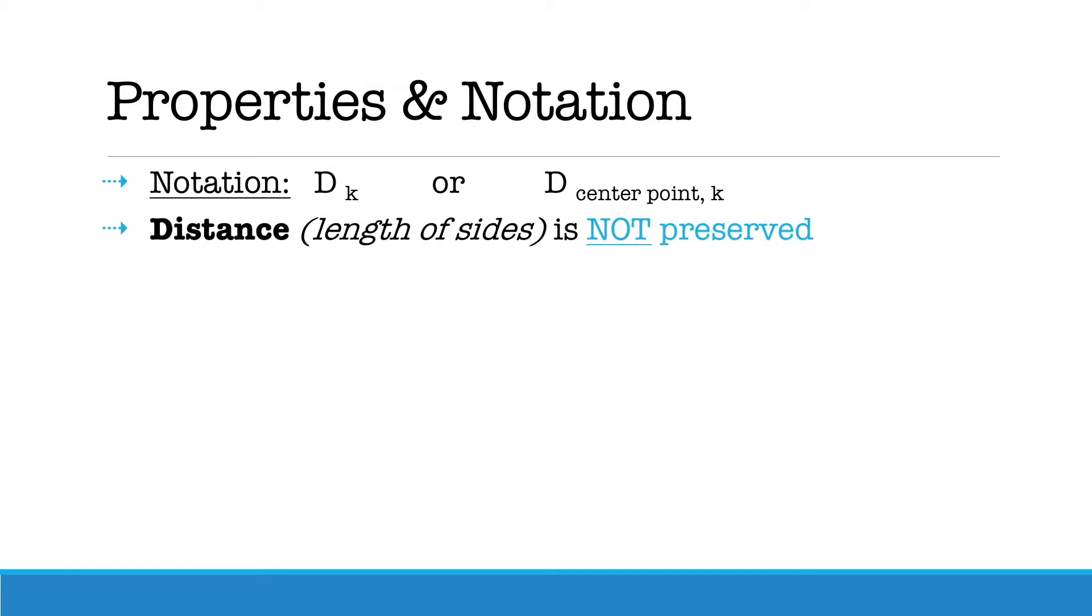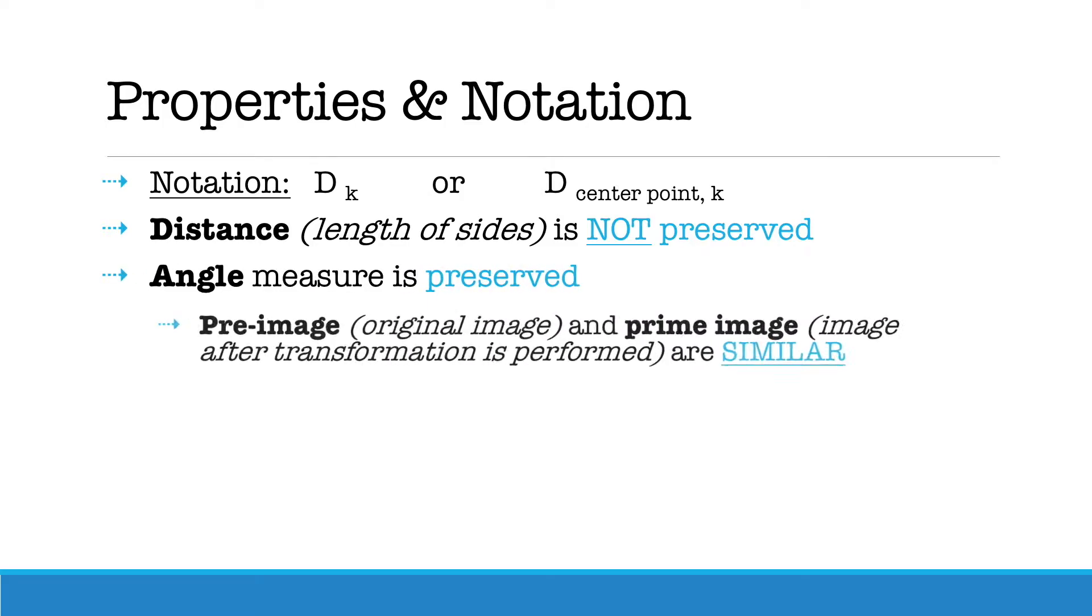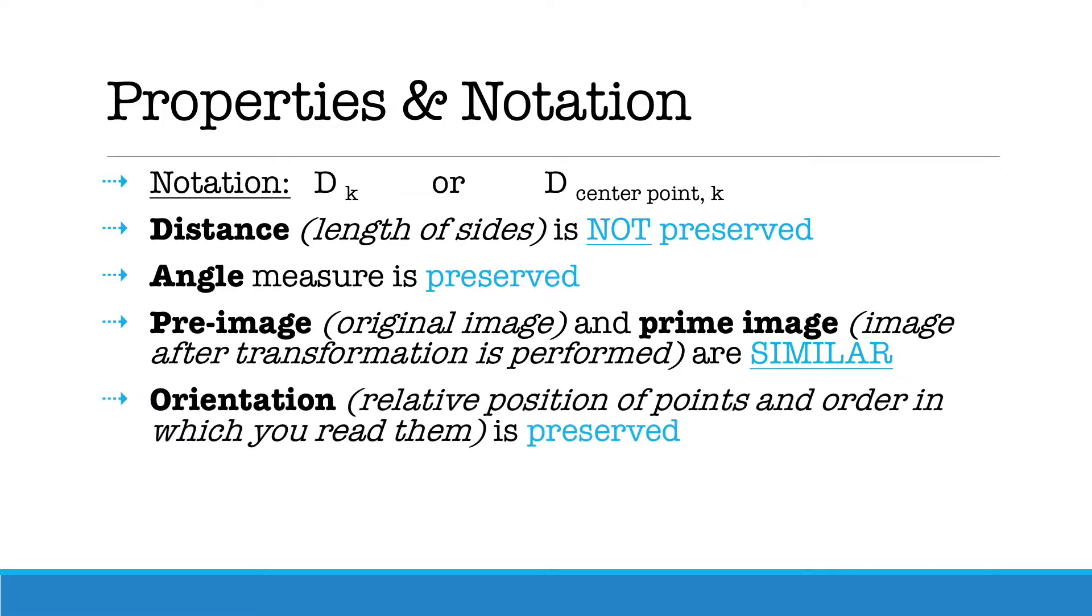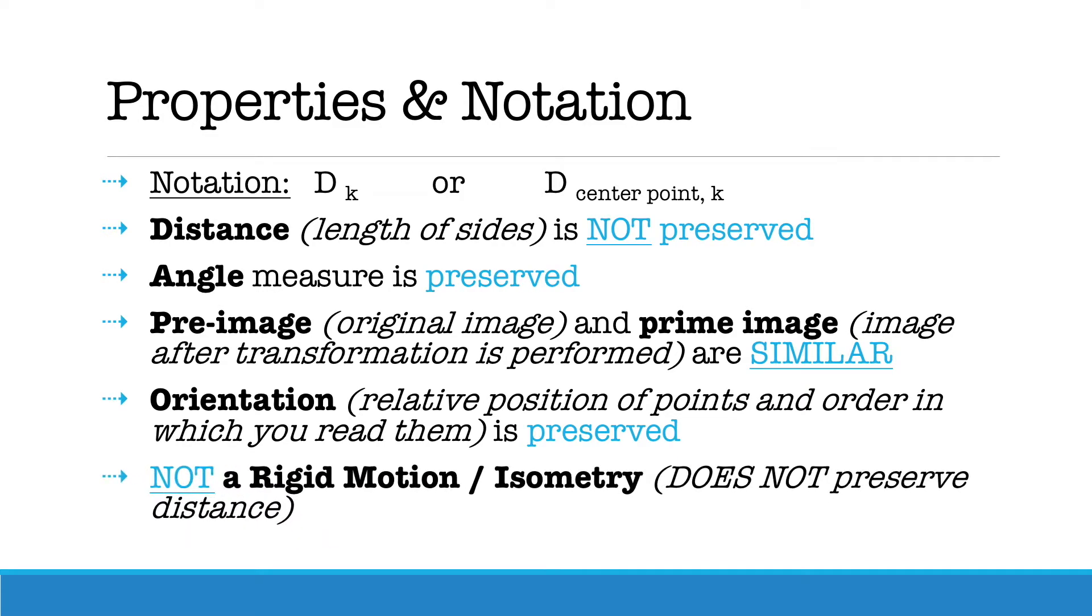For dilations, distance is not preserved since we are making the image either bigger or smaller. However, angle measure is still preserved. Because distance is not preserved, the pre and prime images are similar. Orientation still stays the same. However, even though orientation stays the same, because distance is not preserved, a dilation is not considered a rigid motion.